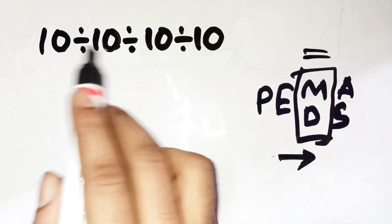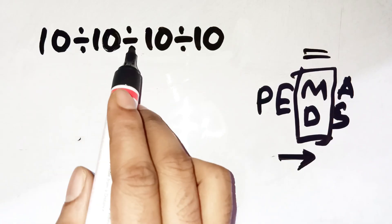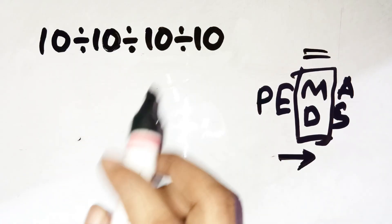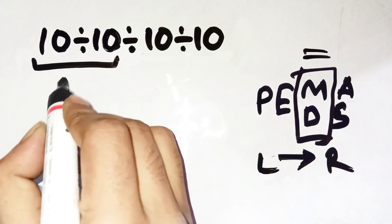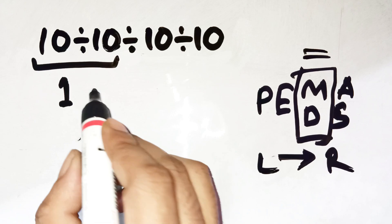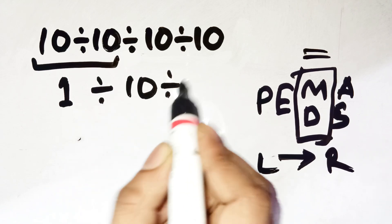Start with the original expression. 10 divided by 10 divided by 10 divided by 10. Step 1, go left to right. 10 divided by 10 equals 1. So now we have 1 divided by 10 divided by 10.